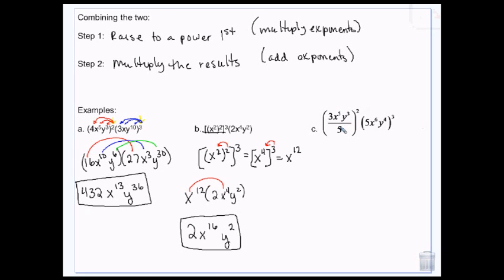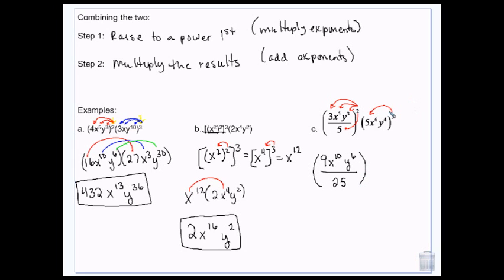Exponents first. I have to square everything. 3 squared is 9. 5 times 2 is 10. 3 times 2 is 6. 5 squared is 25. Then I have to bring everything to the 3rd. 5 to the 3rd is 5 times 5 times 5 — 5 times 5 is 25, times 5 is 125. 6 times 3 is 18. And 4 times 3 is 12.